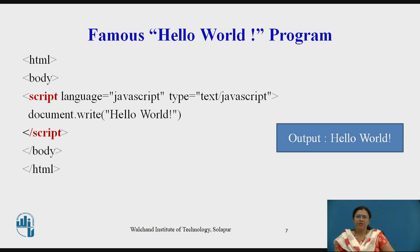The script tag has two important attributes: language and type. The language attribute specifies what scripting language you are using, that means JavaScript. The type attribute indicates the scripting language in use and its value should be set to text/JavaScript.